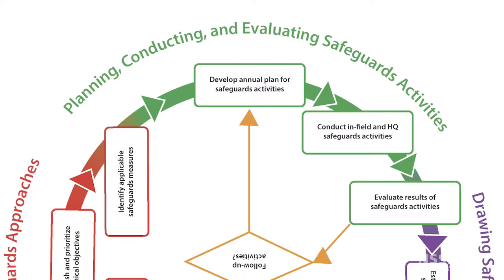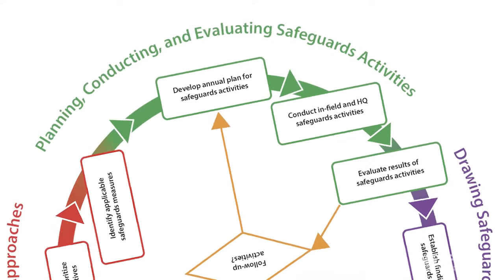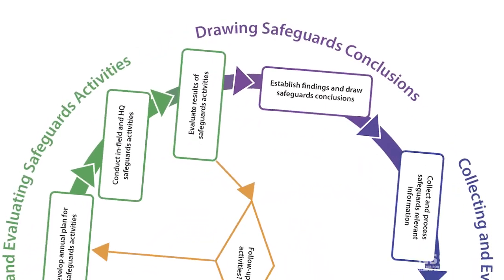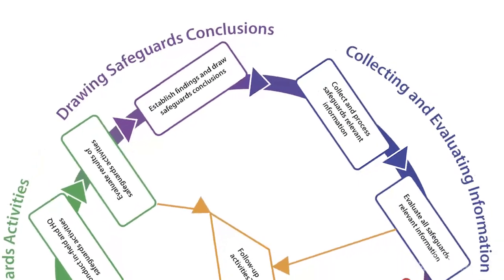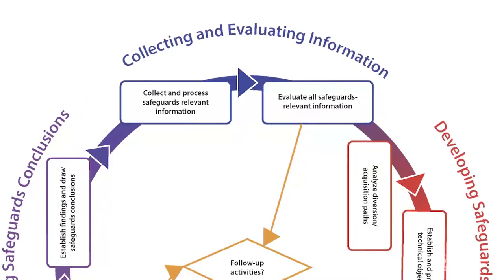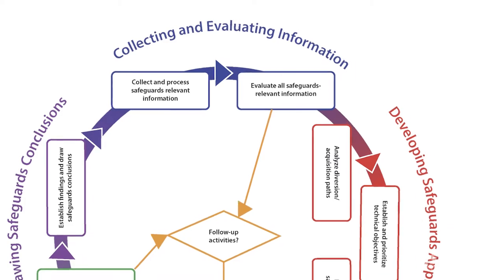Whether that's inspections or other methods to verify the non-diversion and misuse of nuclear facilities. And then, from those safeguards activities, the IAEA can draw safeguards conclusions: is the state living up to its treaty obligations and safeguards obligations, or is there some non-compliance or some inconsistency? Hopefully, there isn't. And then the IAEA goes back to collecting and evaluating information, back through this wheel of safeguards activities.